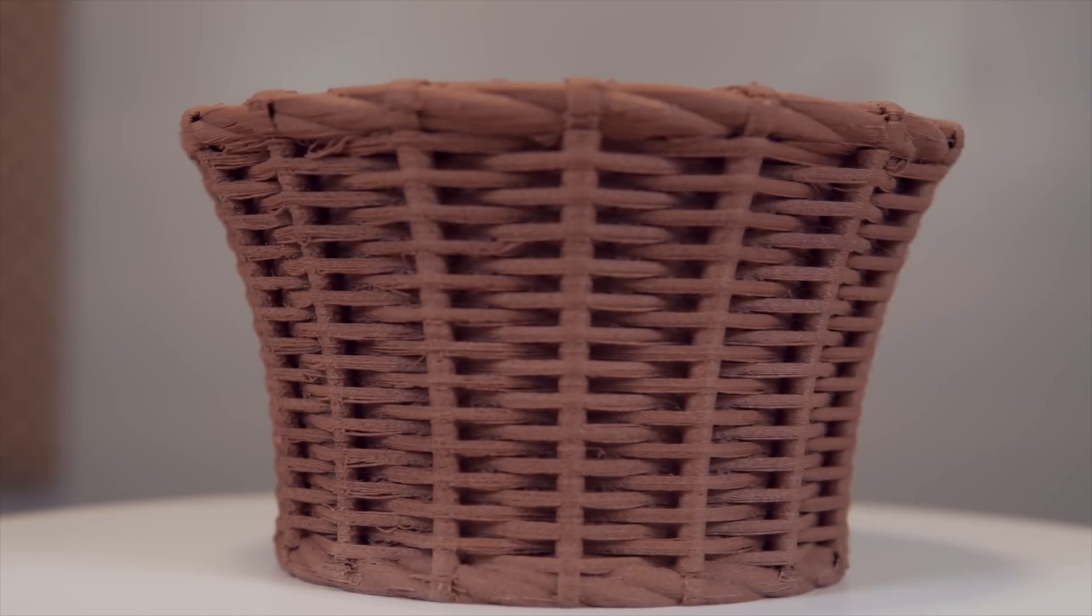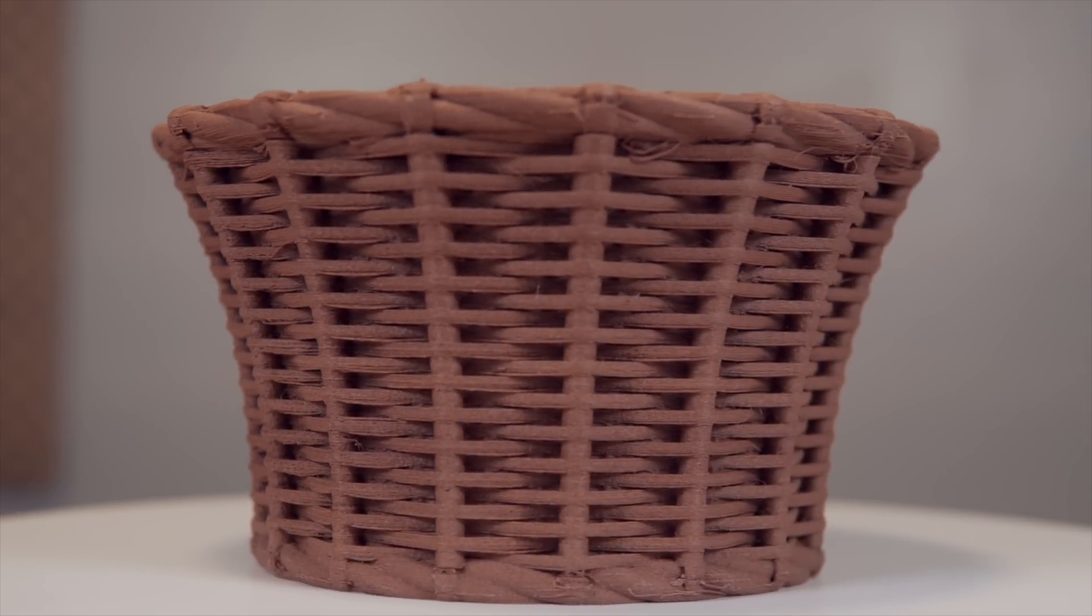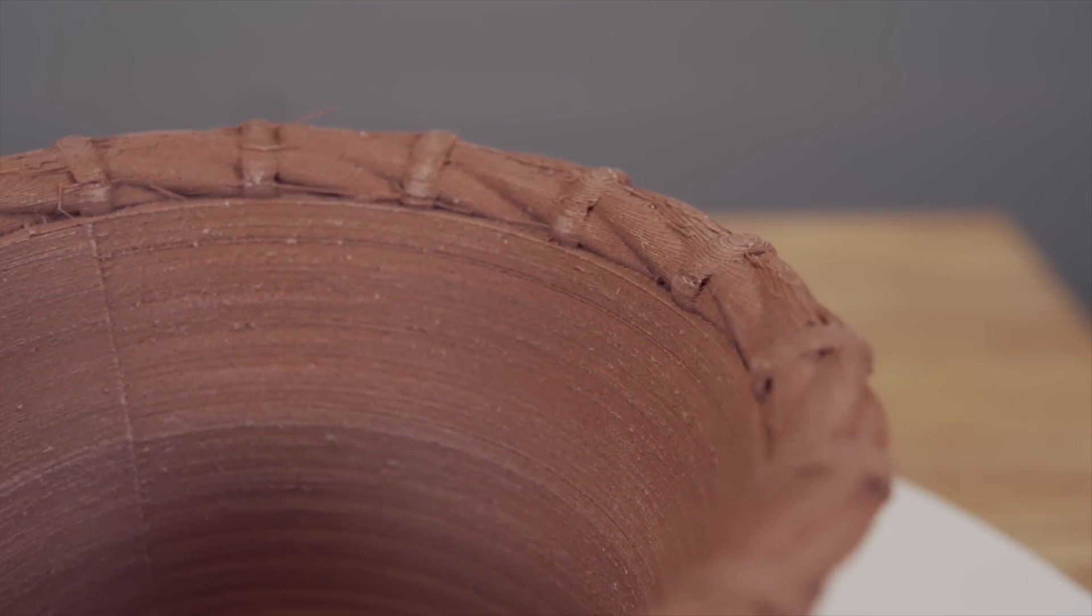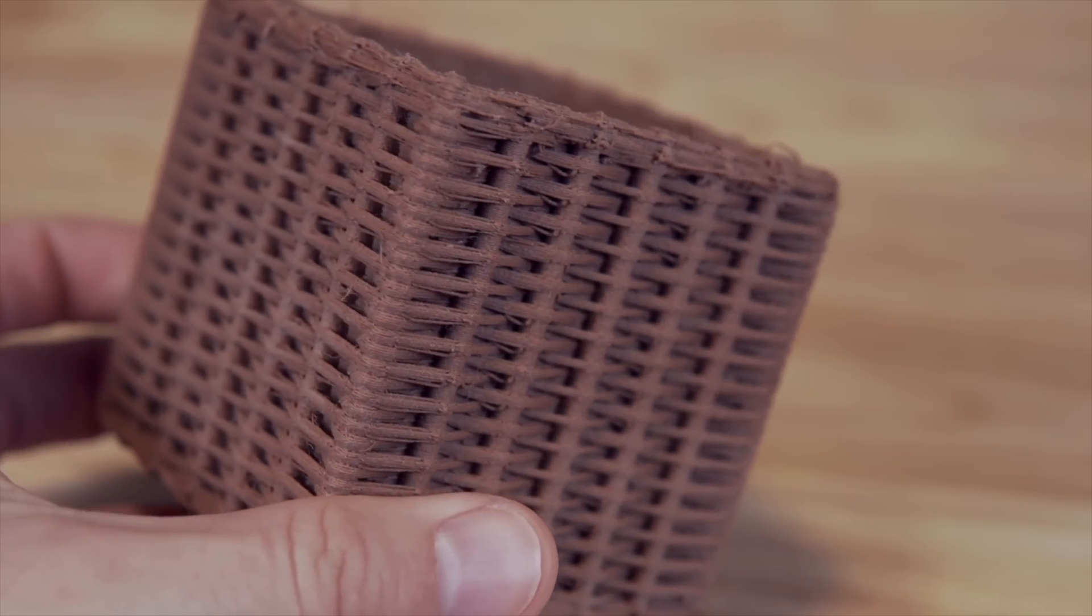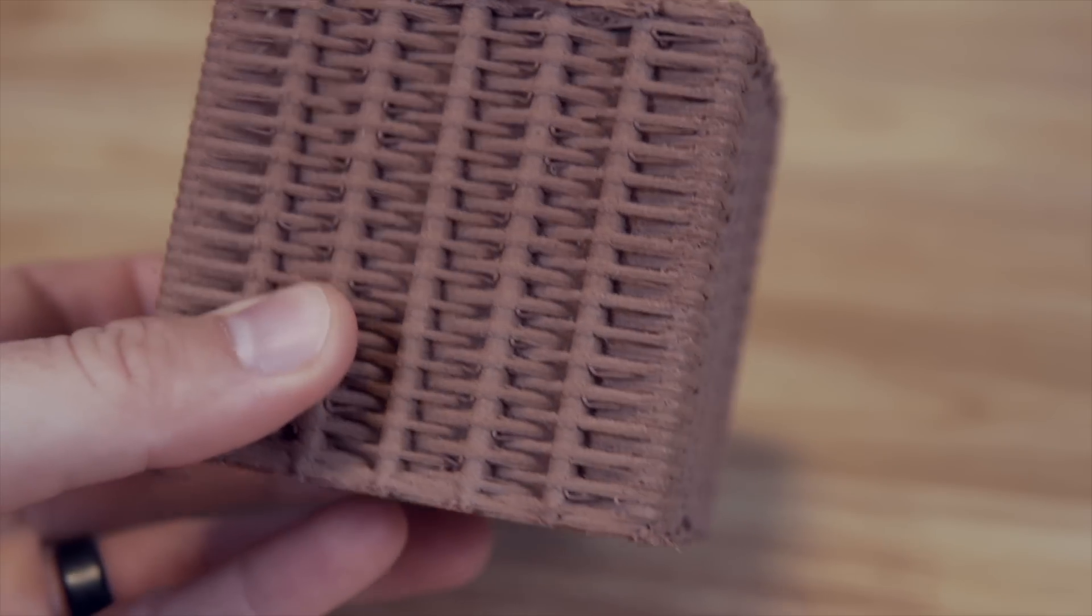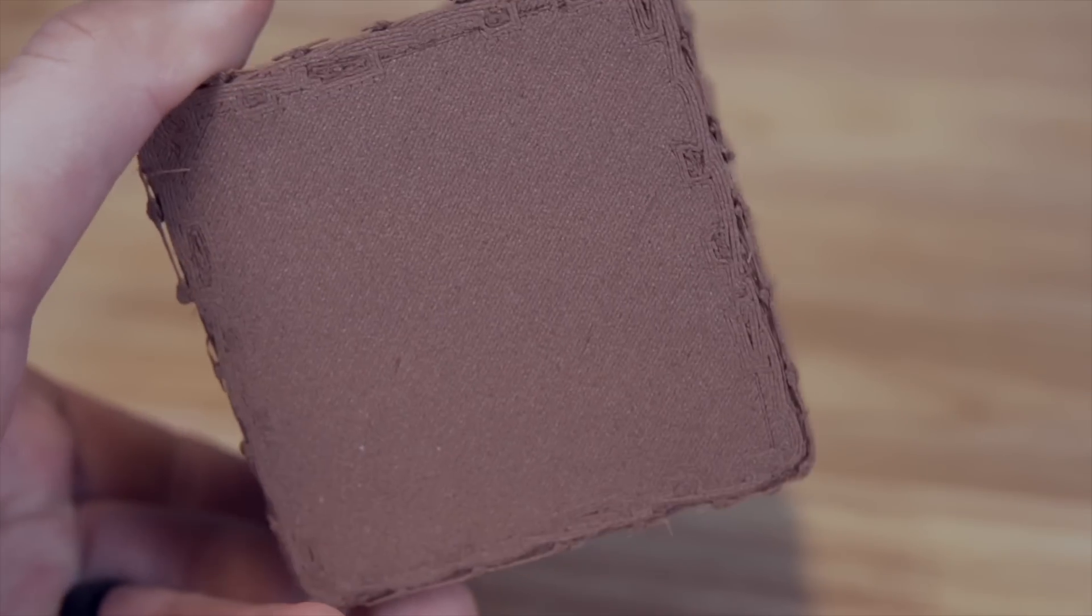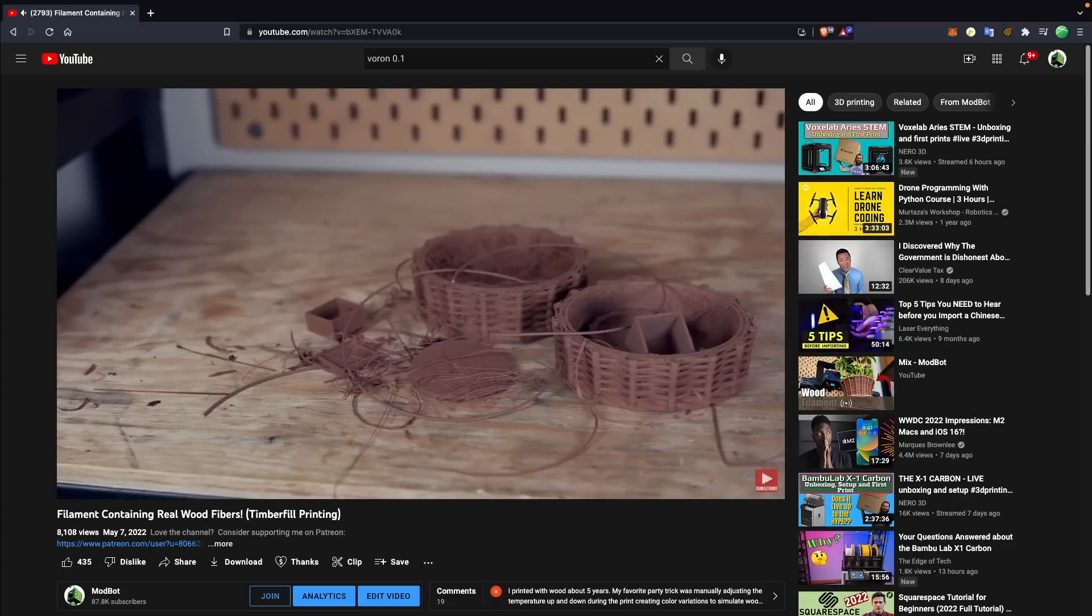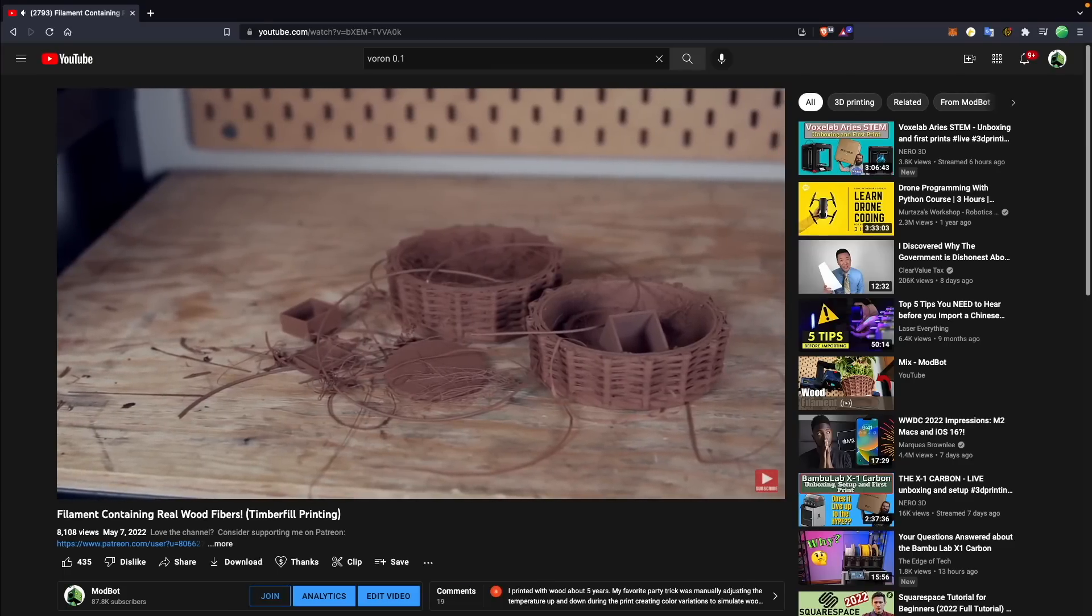I actually went right from printing that test file to printing with wood fill on the Cobra, which did require swapping over to a 0.6 millimeter nozzle after some trial and error, but I was very happy with the end results. If you haven't seen that video and you want to see more about the process and what the prints look like, I will have a link in the description over to that video for you.